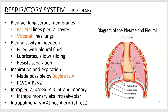As you breathe in, the volume of your lungs gets bigger, which causes the pressure to drop. That's what we see in Boyle's law, which I'll talk about on the next slide. The formula is P1 × V1 = P2 × V2. It's fairly simple math — pressure times volume equals pressure times volume — and I'll explain that with the next slide.